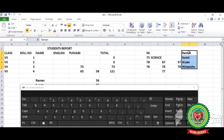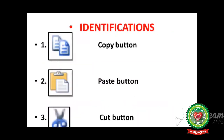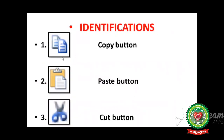Today we have discussed how to copy and move data. The shortcut keys related to copying and moving are: Ctrl+C to copy, Ctrl+V to paste, Ctrl+X to cut, and the Escape key to remove the border around the selected cell. The identifications are the copy button, paste button, and cut button. Write these shortcut keys down and do the practice at home so that you can understand the chapter thoroughly. Thank you.